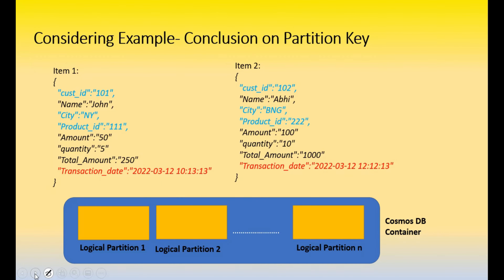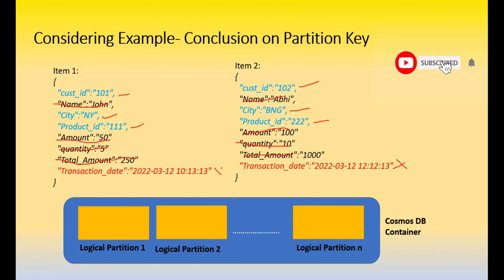In conclusion, referring back to our example: the attributes shown in blue are the best eligible candidates for a partition key - they can spread data across different logical partitions and help optimize both storage and throughput with good latency. The attributes in black are not suitable because they are not unique values. Transaction date should never be considered as a partition key because, as we've seen, it leads to performance issues: each date gets its own logical partition, and any update requires hitting all logical partitions. Hope this was useful - thanks for watching.